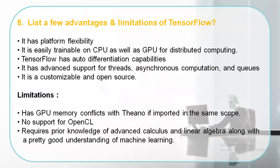List a few advantages and disadvantages of using TensorFlow. Disadvantages: it has GPU memory conflicts, no support for OpenCL, and you require good advanced calculus and linear algebra along with a good understanding of machine learning. Advantages: it has good platform flexibility, is easily trainable on CPU for distributed computing, has auto-differentiation capabilities, is customizable and open source, and has advanced support for threads, asynchronous computations, and queues. Auto-differentiation is one of the most important features of TensorFlow.